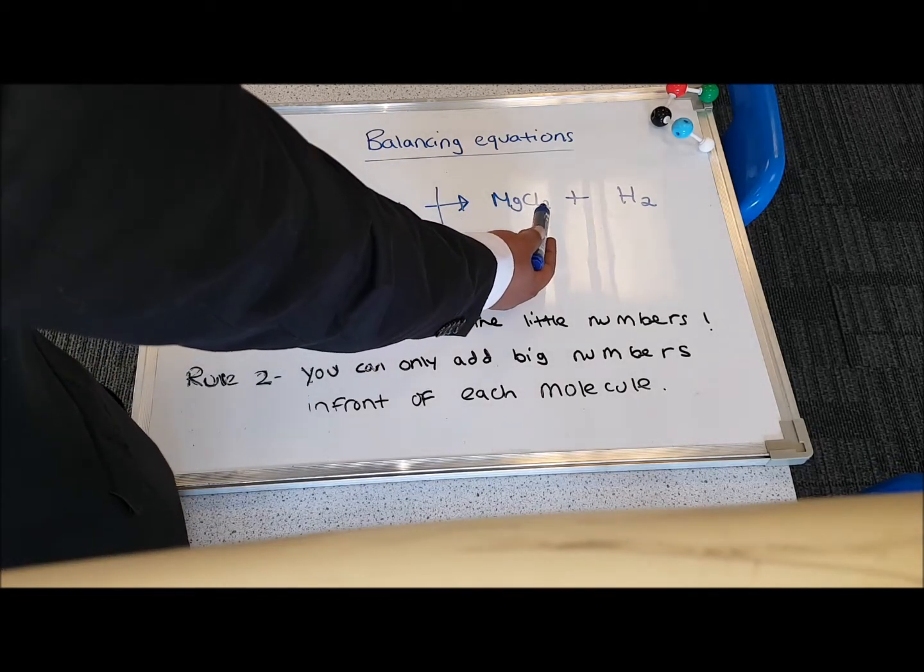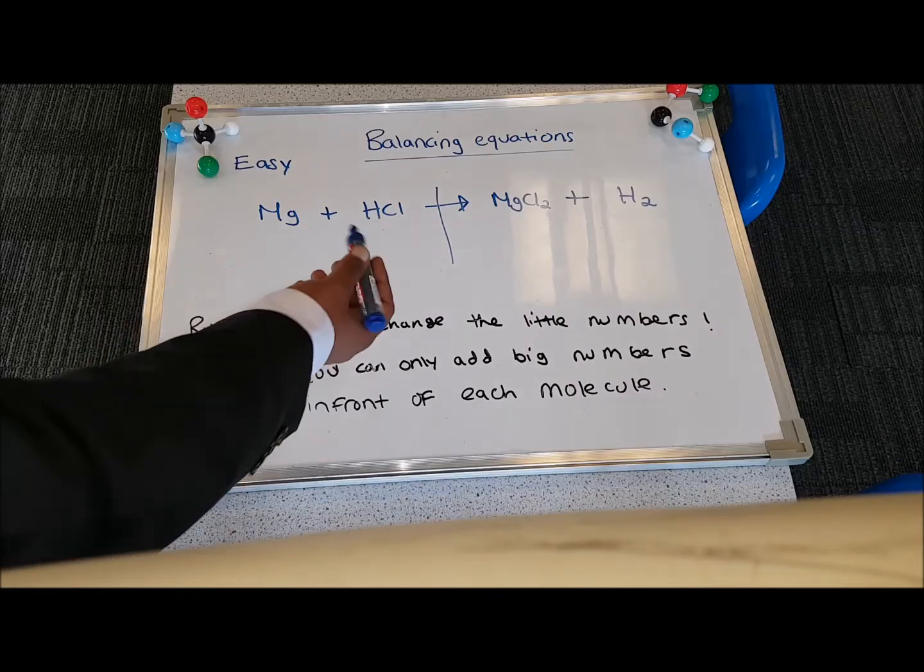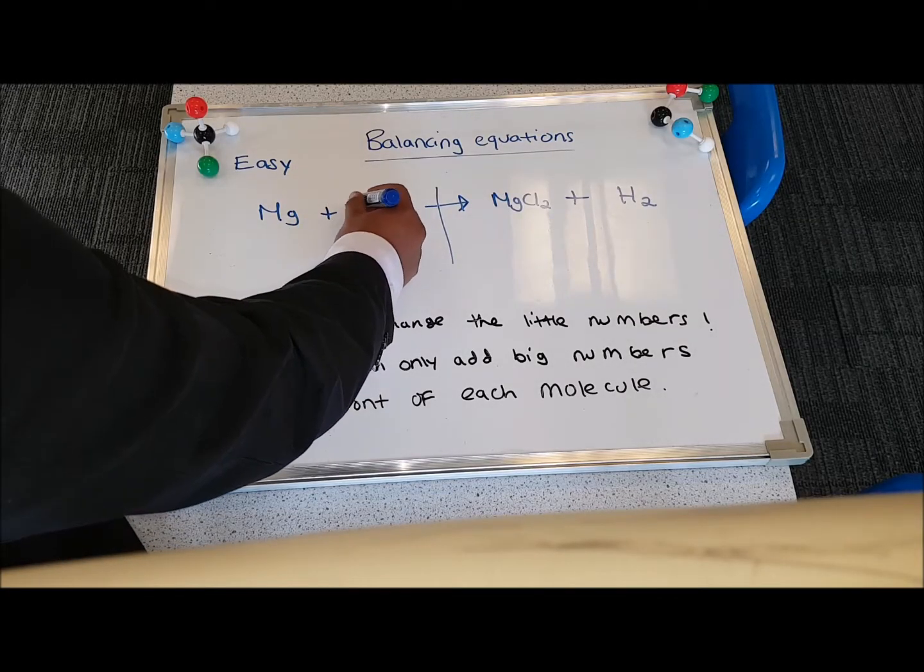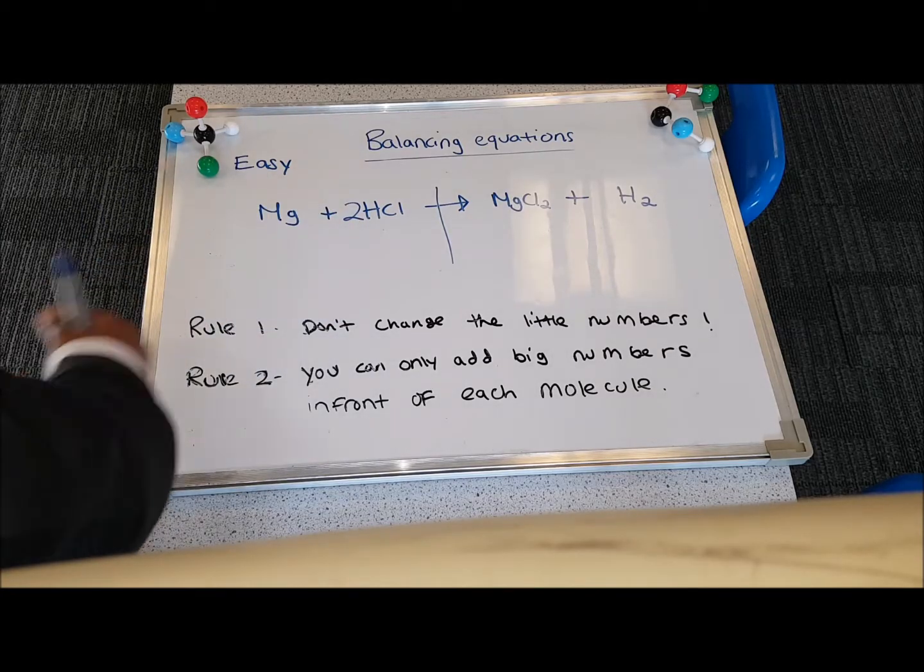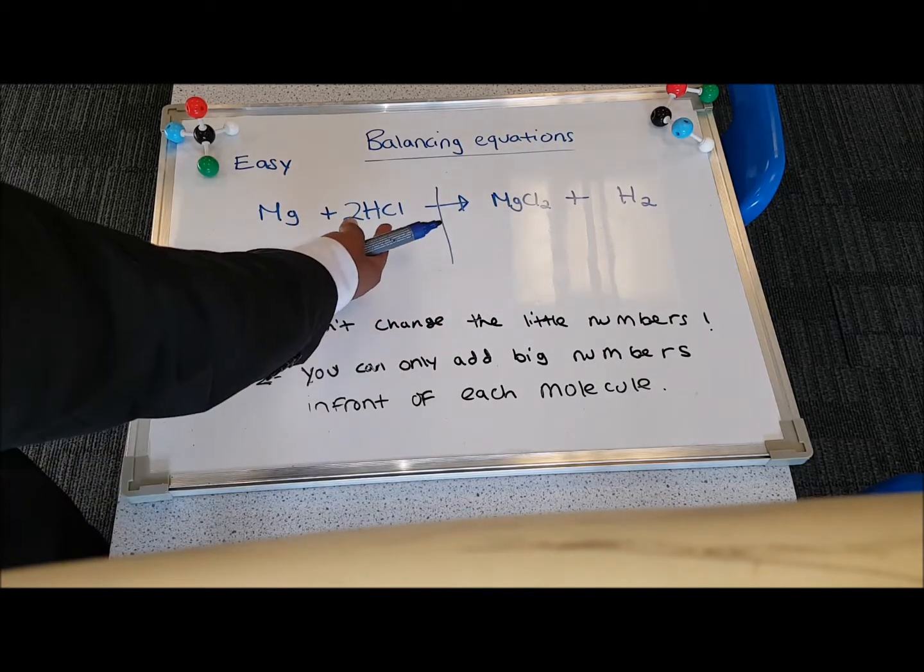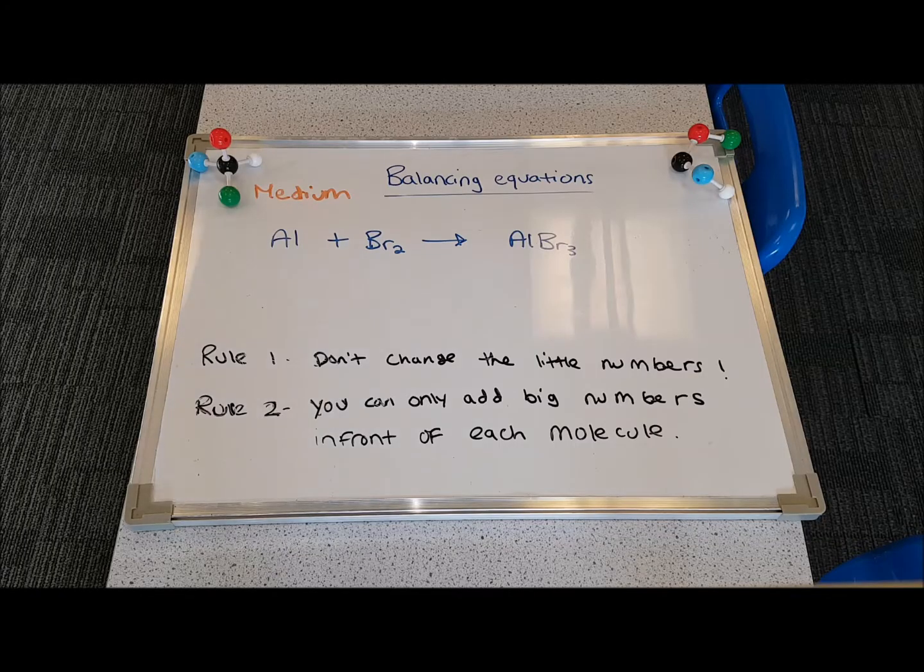If you look at the chlorines, there's two chlorines on the right, one over here. So you can solve this by simply putting a big 2 in front of the HCl. So now you have two hydrogens on the left, two on the right, two chlorines on the left, two on the right.